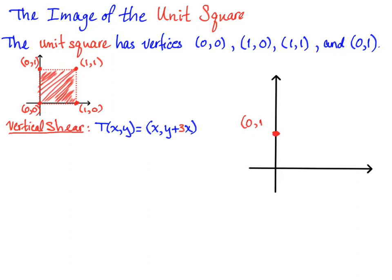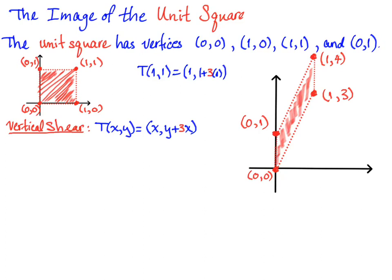The other two vertices have first component 1, so the second component is shifted by 3 times 1, or 3. Both of those vertices are shifted upward by 3. So T(1,1) = (1, 1+3) = (1,4) and the other one is (1,3). If we connect those dots and fill in the region, we see it is not a square — not even a rectangle. This is the image of the unit square under that vertical shear.